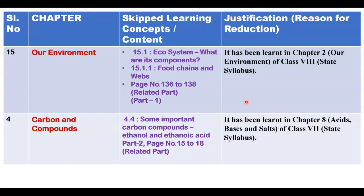Next, chapter number 15 — Our Environment. Section 15.1, Ecosystem and its components, is completely skipped. Section 15.1.1, Food Chains and Webs, is also skipped, covering page number 136 to 138. Compared to the previous reduced syllabus, the new version clearly specifies which topics have been skipped.